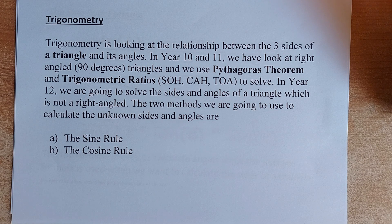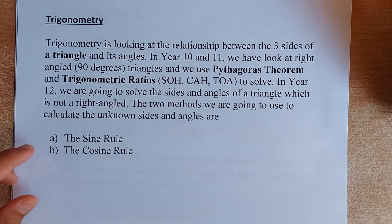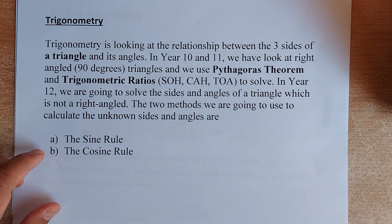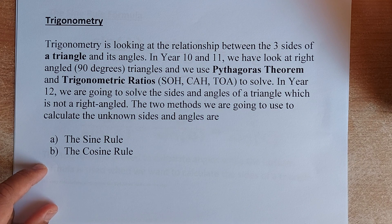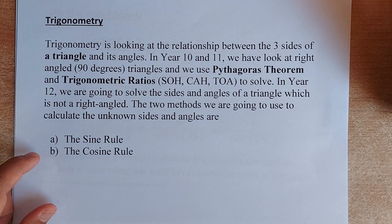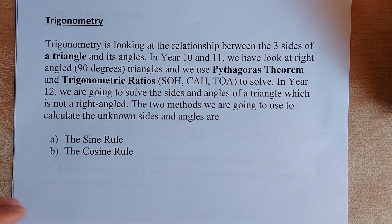The two methods we are going to solve using trigonometry for year 12 are two rules. The first one is called the sine rule and the second one is the cosine rule. Both these rules can be used to calculate both the size and angles of any triangle.